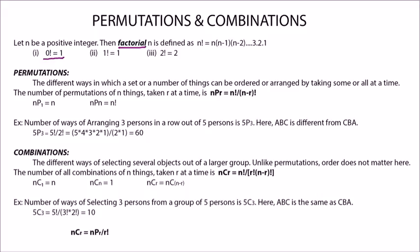0 factorial is 1, 1 factorial is 1, 2 factorial is 2, 3 factorial is 3 into 2 into 1, which is 6 and it goes on.